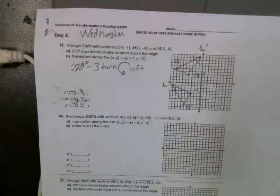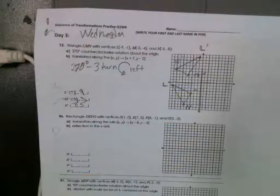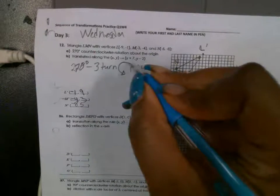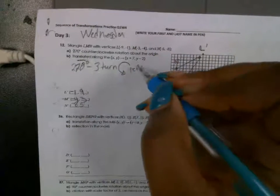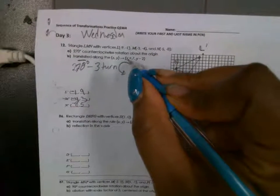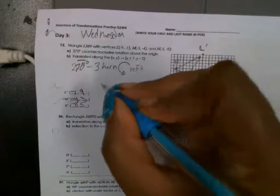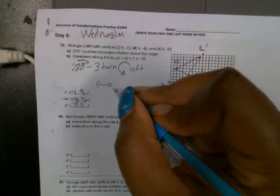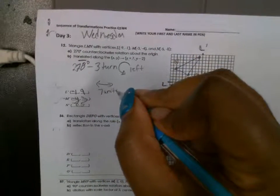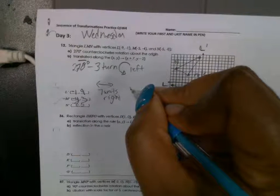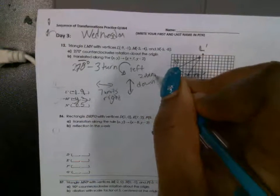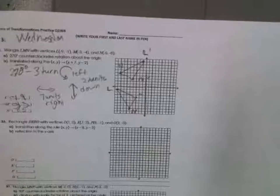And you have rotated that object counterclockwise to the left three times. Now translate it — so you're going to slide it. Translate means to slide. 7 units — and since it's X plus, X is left/right, so since it's plus, you're going to the right 7 units. And Y minus 2 — Y is up/down, minus is down, so this is going to be 2 units down.